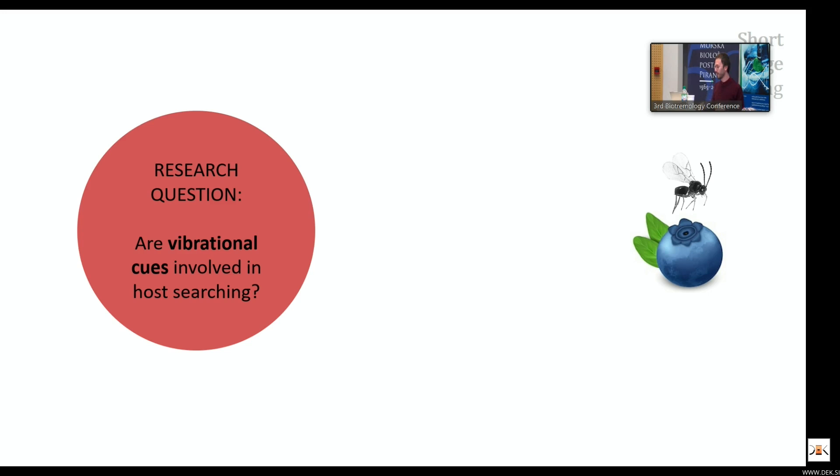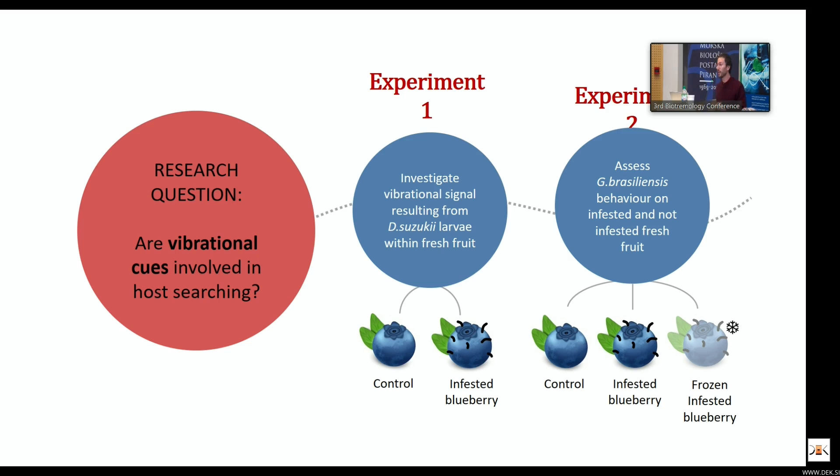To do so we developed two experiments. The first one was to investigate if the infested blueberry is actually vibrating, so if there are some vibrations in the infested blueberries. Secondly, we investigated and assessed the behavior that our parasitoid has on infested fruits. We prepared control blueberries which have not been infested, infested blueberries, and in the second case we also took infested blueberries and froze them to maintain the chemical stimuli but to kill the larvae and stop having vibrational cues.